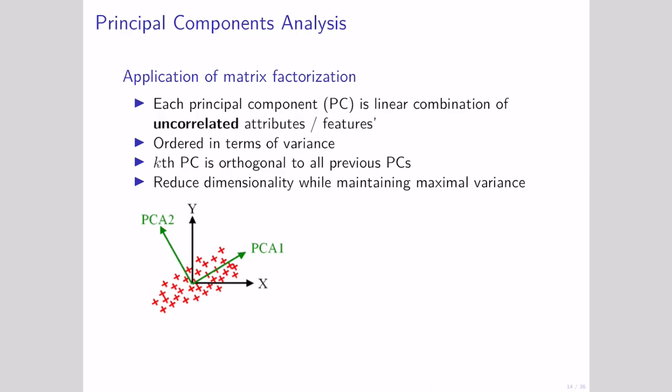In principal components analysis, each principal component is going to be one of those R vectors. We're going to say it has to be uncorrelated with the other principal components — so orthogonal to the other principal components. It's ordered from the principal component that captures the most variance to the least variance. And it's going to reduce down the dimensionality while prioritizing capturing the maximum variance in the dataset — prioritizing patterns where there's a lot of variation. Those rules give us principal components.